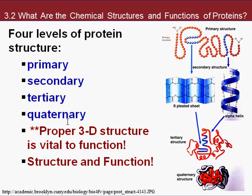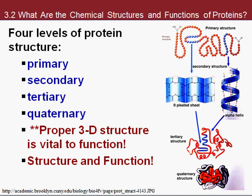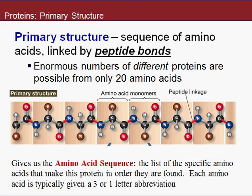One of the most important properties of proteins is their three-dimensional structure, which gives them their function. There are four levels of structure. The first is primary structure — essentially just the amino acid sequence, one amino acid after another, all linked together by peptide bonds. This is sometimes referred to as beads on a string, held together by peptide bonds.